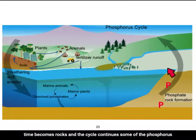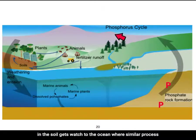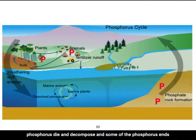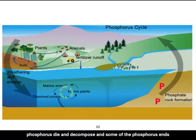Some of the phosphorus in the soil gets washed to the ocean, where a similar process takes place. Plants and animals in the ocean absorb the phosphorus, die and decompose, and some of the phosphorus ends up as sediments in rock.